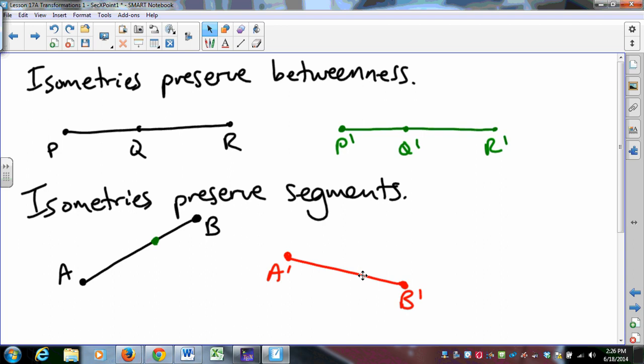Then, you will extend that argument, and you will say, wait a minute, if isometries preserve segments, then they also preserve lines. If something was a line before, you perform an isometry on the plane, that's still a line. Isometries preserve rays. If there was a ray before the isometry, it's still a ray after.